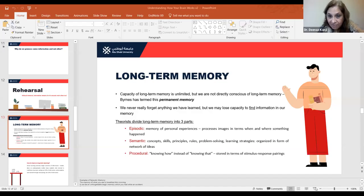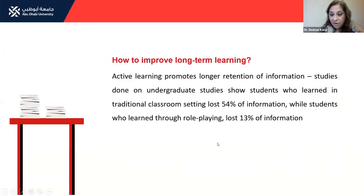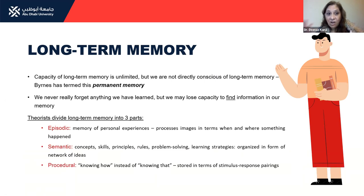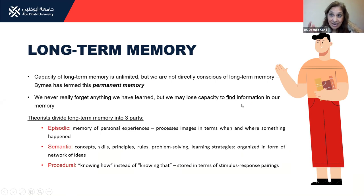Let's talk about our long-term memories. Key information here is that long-term memory is unlimited. But we're not always conscious of what is in our long-term memory. The idea is that we never forget anything we have learned, but we may lose the capacity to find information — recall is difficult. Information is there, but recall becomes difficult.